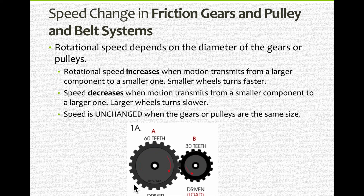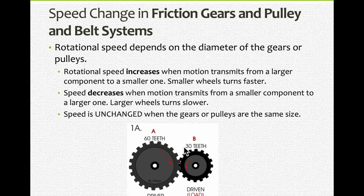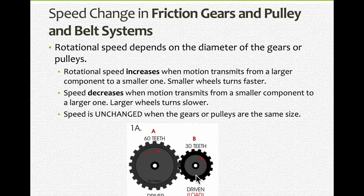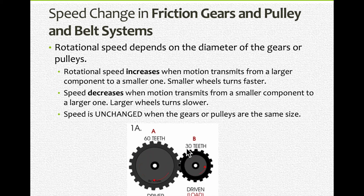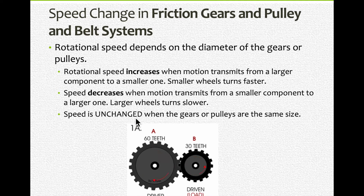We always analyze from the driver to the driven. Here my driver is bigger, turning more slowly, going from slow to smaller, or faster. So we're going from bigger to smaller, slower to faster — there is an acceleration. If both were the same size, then the speed would be unchanged. So there's not always an acceleration or deceleration; sometimes it's unchanged because the gears have the same size.